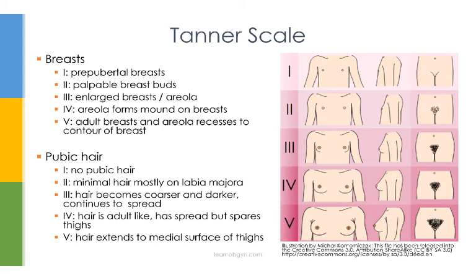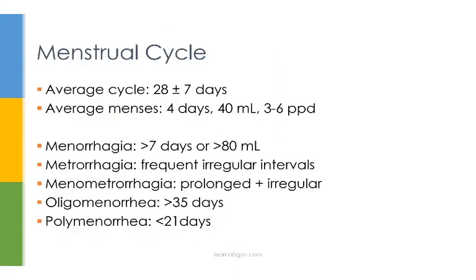Now let's talk briefly about the Tanner Scale. The Tanner Scale is used to grade the development of breasts or pubic hair. The scale ranges from level 1 to 5. A finding of level 1 corresponds to what you'd expect to see in someone who hasn't hit puberty yet, and a finding of level 5 is what you'd expect to see in someone who has completed puberty and become a full-fledged adult.